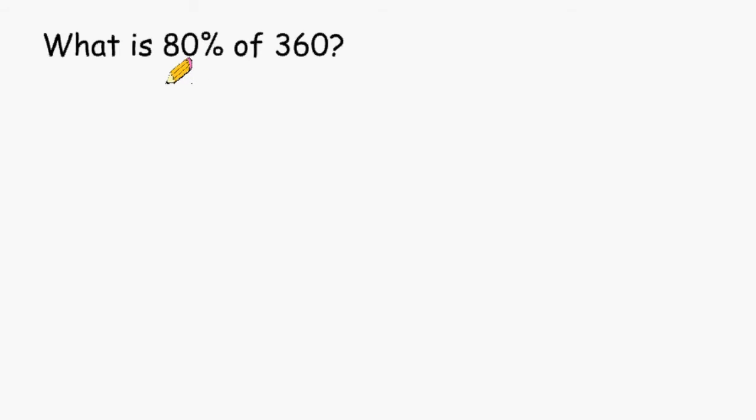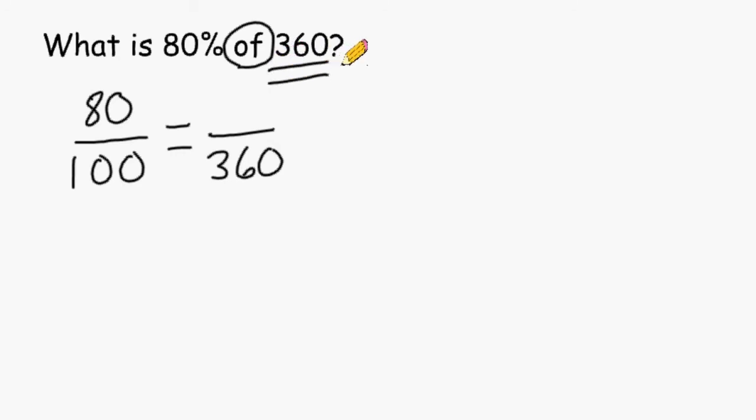We could generally say that 80% takes up most of 100. Therefore, the answer we are looking for should take up most of 360. So let's start by expressing our percentage as a fraction. We would write that as 80 out of 100. And for the other rate, we will write 360 as our denominator, because the word of in front of it indicates that we are talking about a whole or a total.